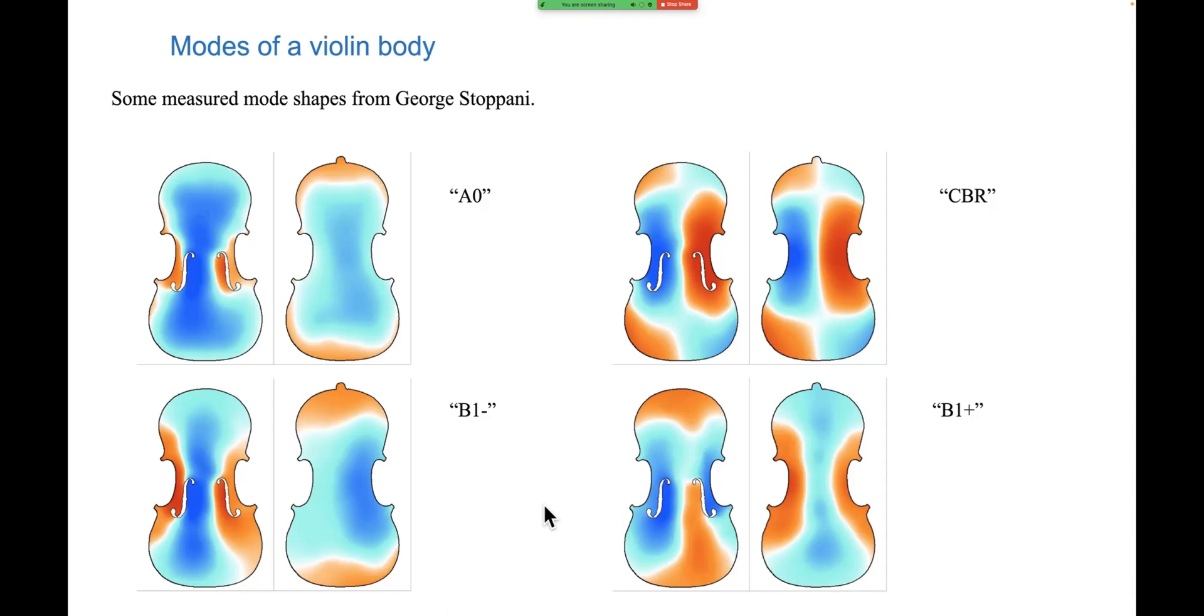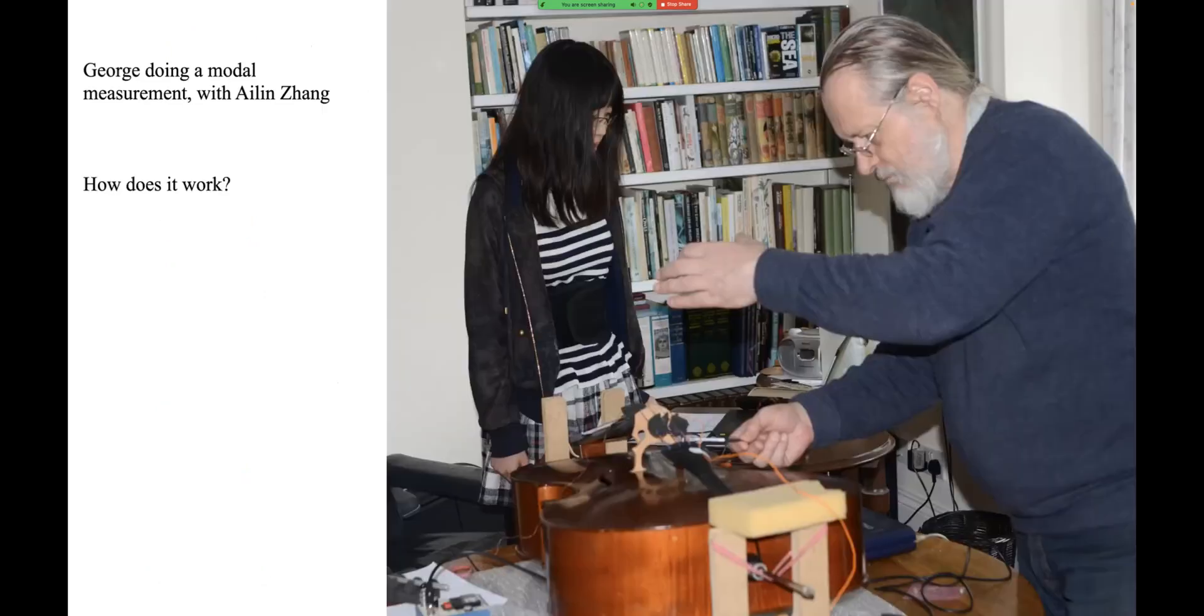But that's not the main purpose of today's talk. The main purpose is, how did George do it? It says these are measurements. Here's a picture of George doing a measurement, assisted by Eileen Zhang. We're going to look at roughly how this measurement works. Let's look carefully at this picture to see what he's doing. Obviously in this case he's measuring a cello rather than a violin. At first glance you might think the cello is resting on its back on the table, but that would be a bad idea because that would stop the back from vibrating properly.